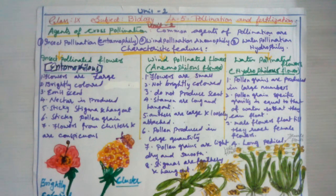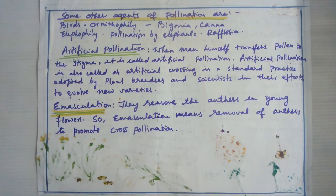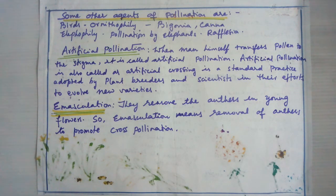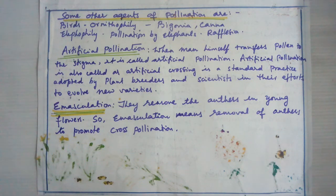Now we move to artificial pollination. Sometimes man himself transfers pollen grains to the stigma — for example, in vanilla cultivation — to ensure cross-pollination and obtain healthier, viable seeds. In the ancient civilization of Babylonia, it was common practice to sprinkle male flowers on female flowers of palms. Those people did not know about flower sexuality at the time, but they knew the practice resulted in viable seeds.